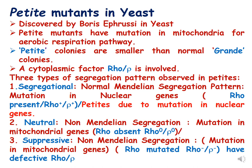Petite mutants in yeast were discovered by Boris Ephrussi. These are mutants with mutations in mitochondria affecting the aerobic respiration pathway. Because of this problem in their respiratory pathway, the colonies formed are smaller compared to normal ones. The normal colony is called the grand colony and the smaller colony is called the petite colony.